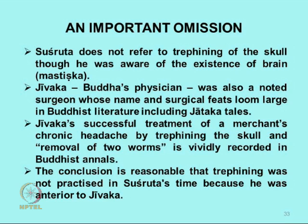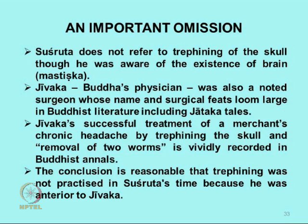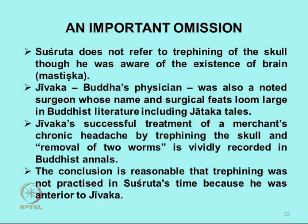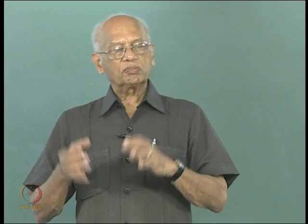There is an important omission in this long list of operations Sushruta gives: there is no mention of trefining of the skull. The head was known, the brain inside was known — Mastishka was known — and the importance of the head is described, but there is no mention of skull trefining in the entire Sushruta Samhita.